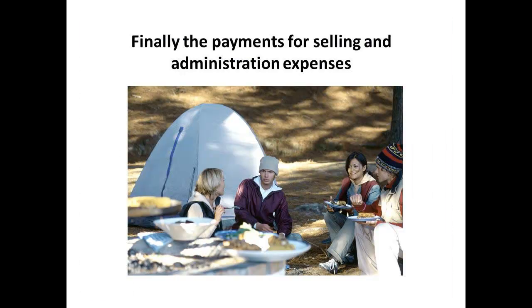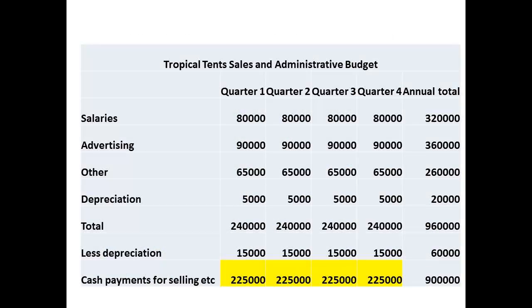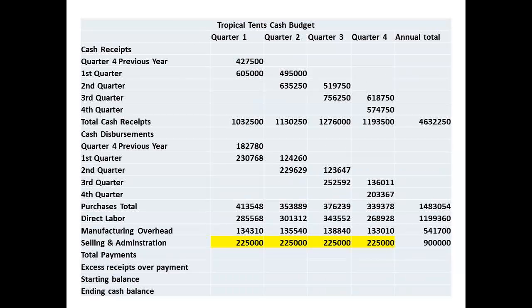The last budget we prepared was for selling and administrative expenses, so we now need to add these to the cash budget. The figures are taken from the sales and administrative budget, shown highlighted, and then shown highlighted again on their entry to the cash budget.